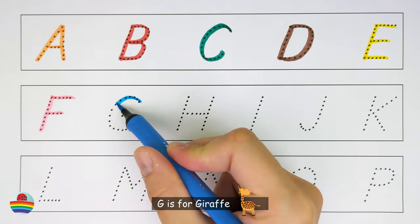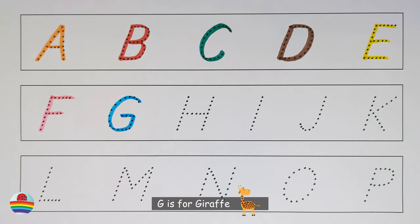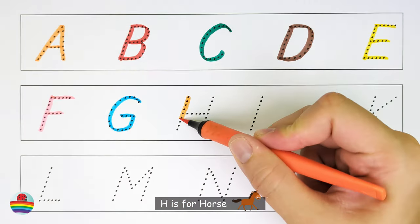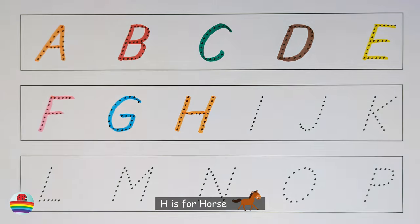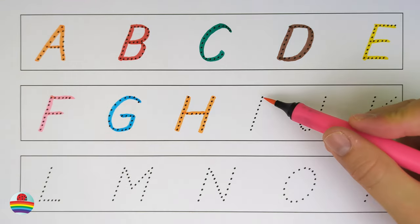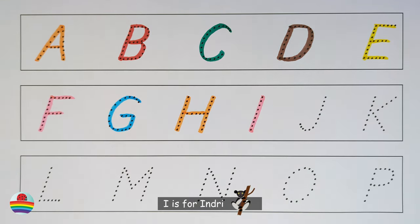G is for giraffe. H is for horse. I is for ibis.